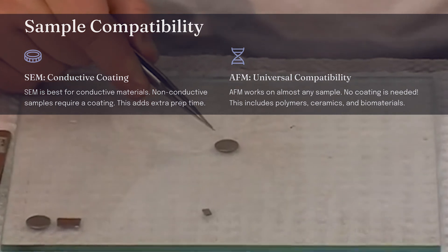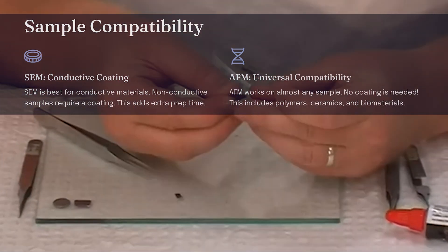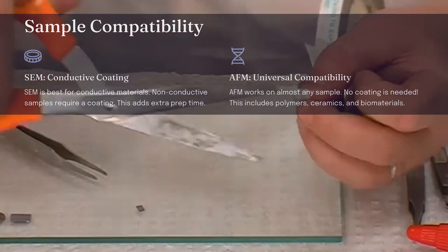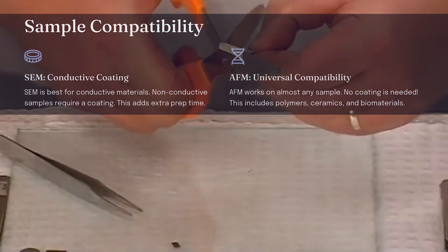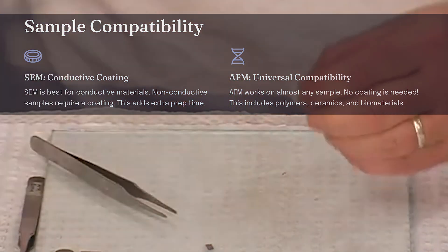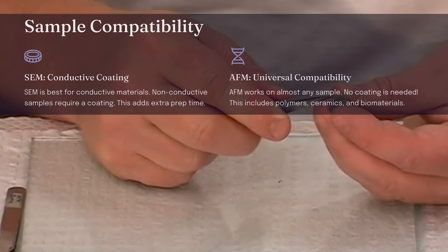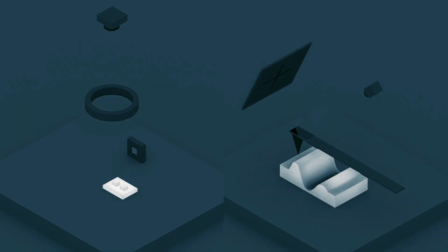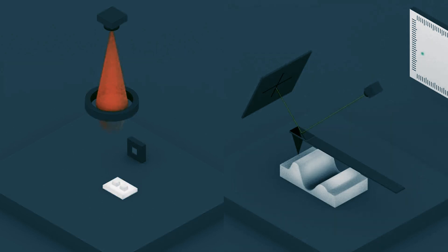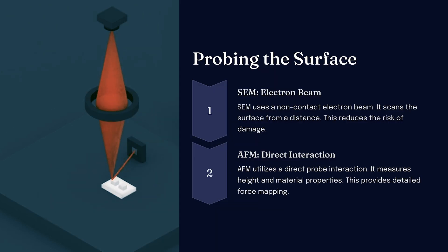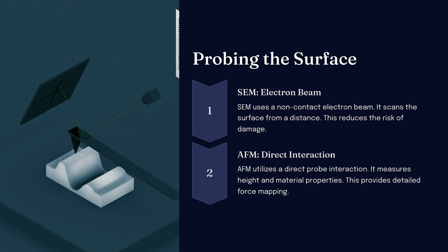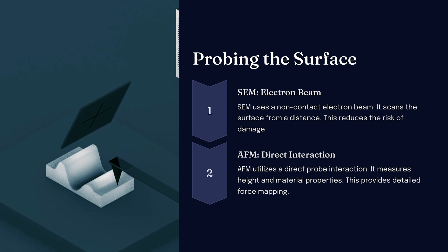What about sample compatibility? SEM works best for conductive materials. If your sample isn't conductive, it must be coated with a thin metallic layer, which might alter the sample's surface features. But AFM works on almost any sample — from rigid metals to soft biological tissues — without any coating required. SEM is a non-contact method; the electron beam scans the surface without touching it, which is great for preserving sample integrity, but it doesn't capture height variations well. AFM, in contrast, physically interacts with the surface using a probe tip, which means it can directly measure height, roughness, and even mechanical properties like stiffness and adhesion.